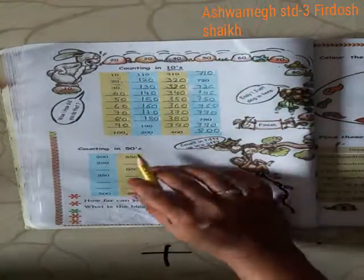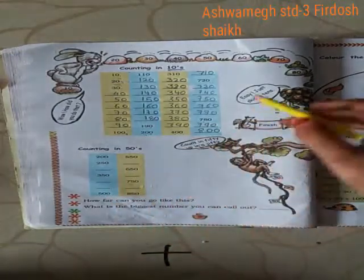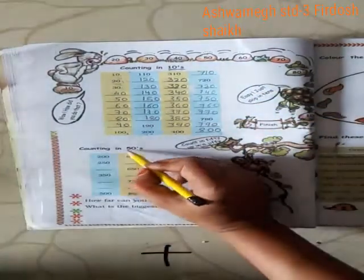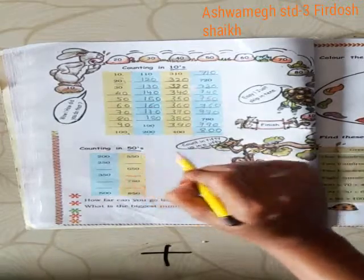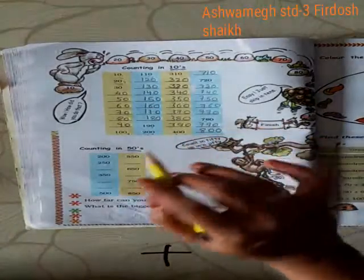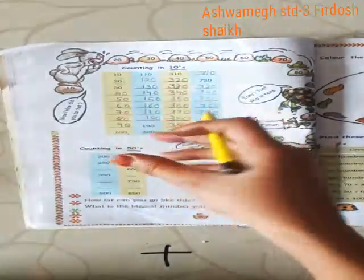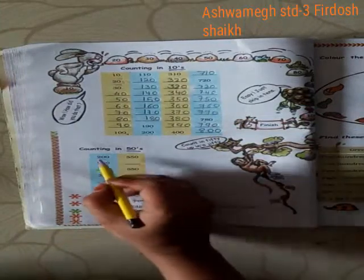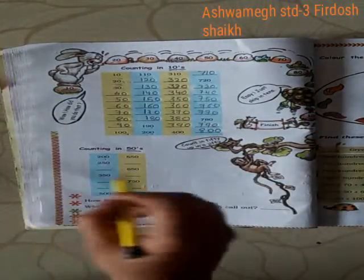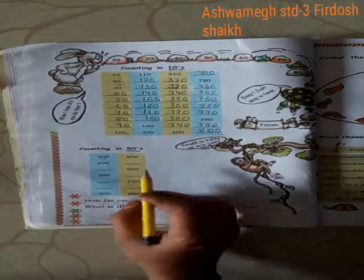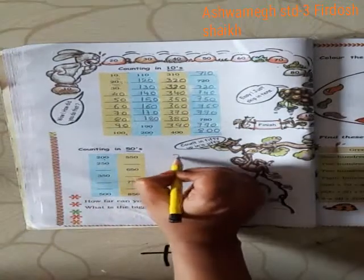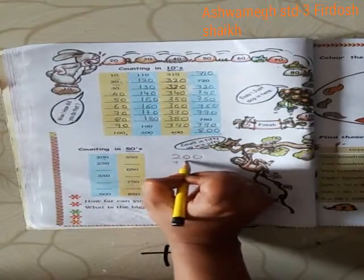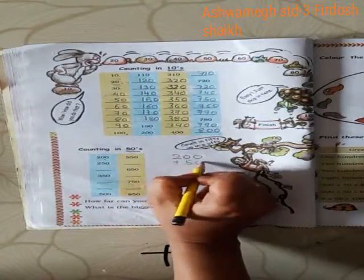Now, same as before, look here — this is counting in 10s, and now we also have counting in 50s. We need to add 50 each time. Look here: start with 200. So 200 plus 50 — let's work it out.